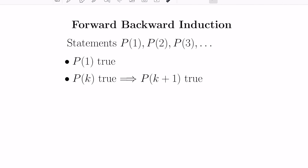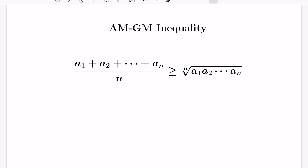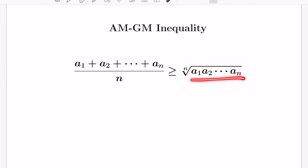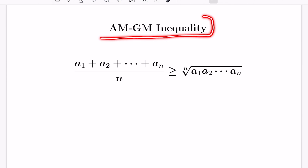We'll be giving a short proof of the arithmetic-geometric mean inequality, which is a classic inequality that says the sum of n positive integers divided by n — in other words, the average of n non-negative integers — is at least their geometric mean, meaning their product and then taking the nth root. Typically the AM-GM inequality is a little bit difficult to prove, but we'll see how forward-backward induction gives a really nice proof.